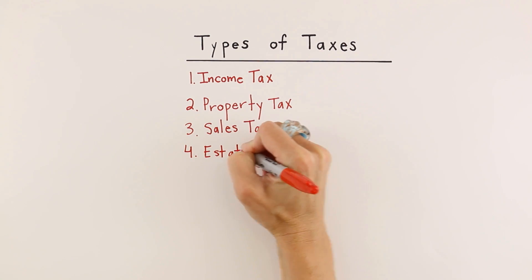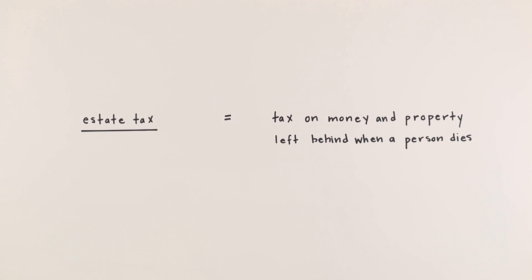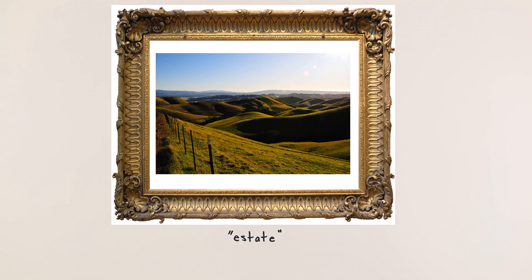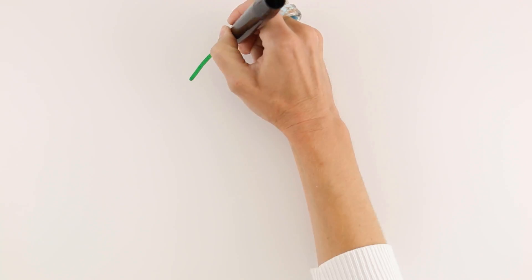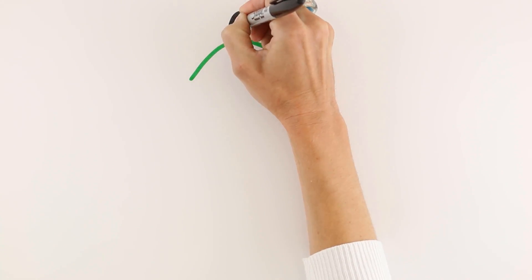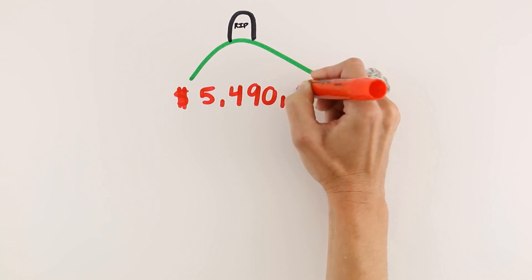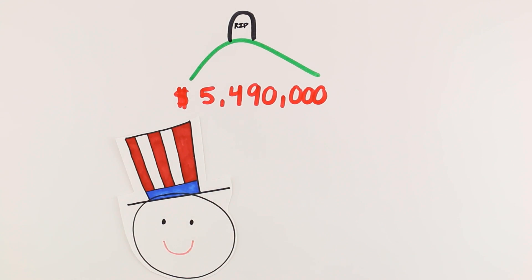The fourth type of tax we will study today is called an estate tax. An estate tax is a tax on property or money left behind when a person dies. An estate is all the money and property that belongs to a person. Currently, if a person dies and leaves behind an estate valued at $5,490,000 or more, the federal government may levy an estate tax and take a portion.